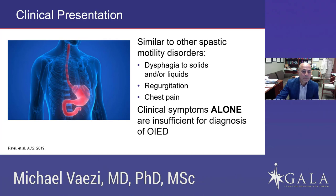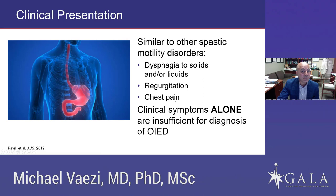How do these patients present? They're on opioids chronically for various conditions, and will often present with dysphagia to solids and/or liquids. They might have regurgitation — which can be esophageal in etiology because of an esophageal motility disorder, or gastric because of gastroparesis. They could also have chest pain because of increased vigor of contraction. However, clinical symptoms alone don't differentiate where the problem might be, so we are still obliged to perform endoscopy to rule out other etiologies.